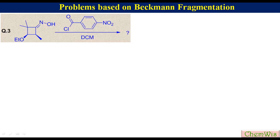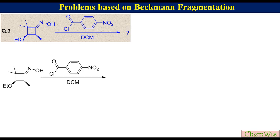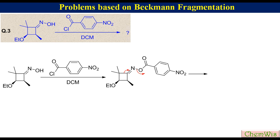Question 3: Predict the product of this reaction. The hydroxyl group of the oxime reacts with 4-nitrobenzoyl chloride to produce the 4-nitrobenzoate derivative. Elimination of 4-nitrobenzoate and breaking this C-C bond leads to the formation of the cationic nitrile. Elimination of the beta proton gives the product, which can be drawn like this.